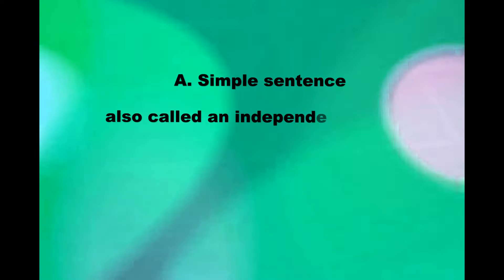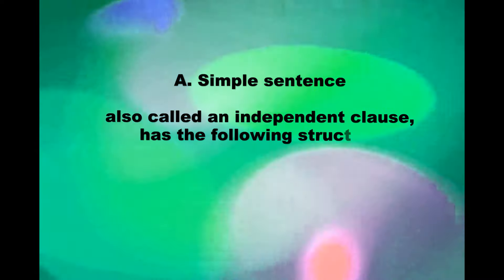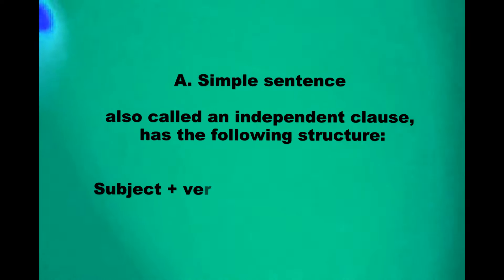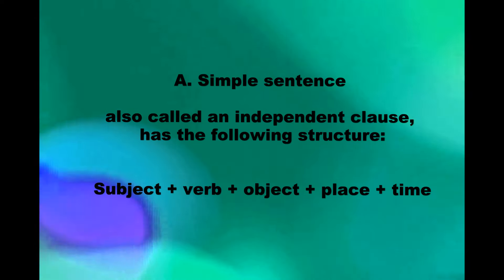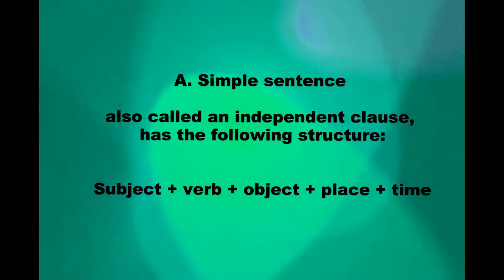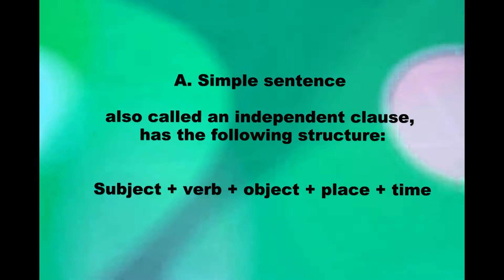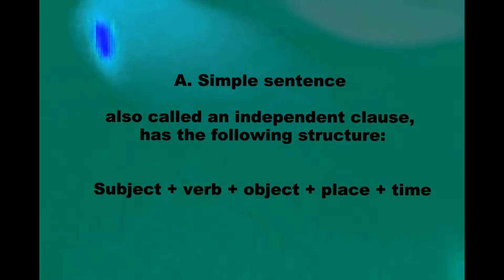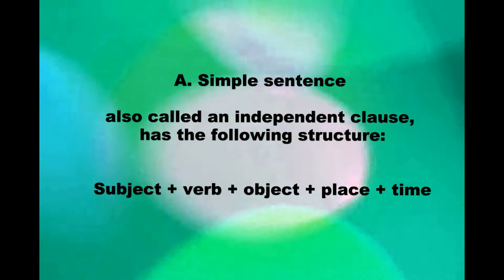A simple sentence, also called an independent clause, has the following structure: subject, verb, object, place, and time.